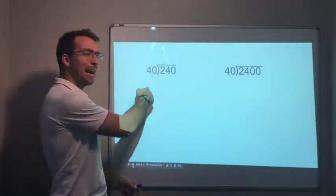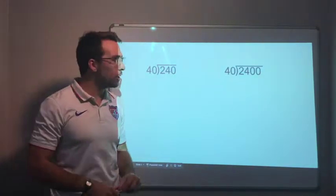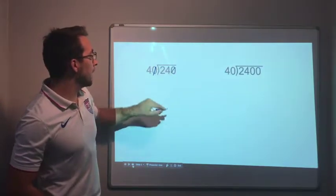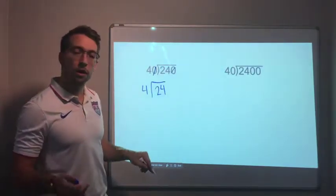Zeros in the divisor and the dividend, what do we do? Here's a trick for you: mark it out. Mark it out. 240 divided by 40 is what? Six. That's my answer.